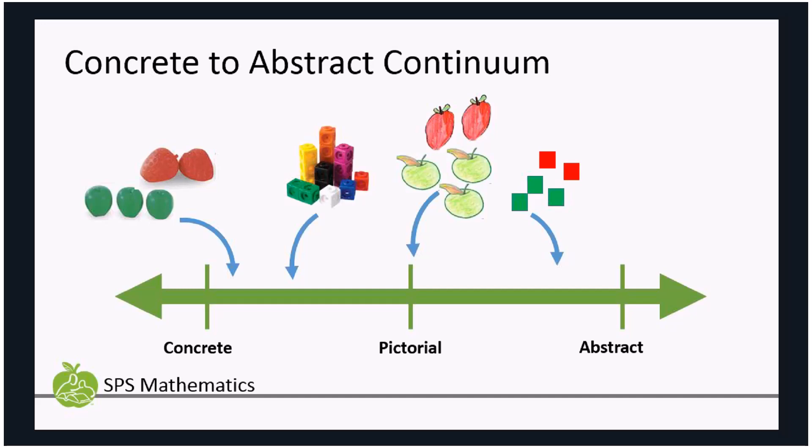The last kind of level that we're working our students towards is that abstract level. That is where they can just use the abstract mathematics, the number sentence, and the numbers themselves to represent what the story or the situation was saying. So in this particular case, they can actually go to 3 plus 2 equals 5.